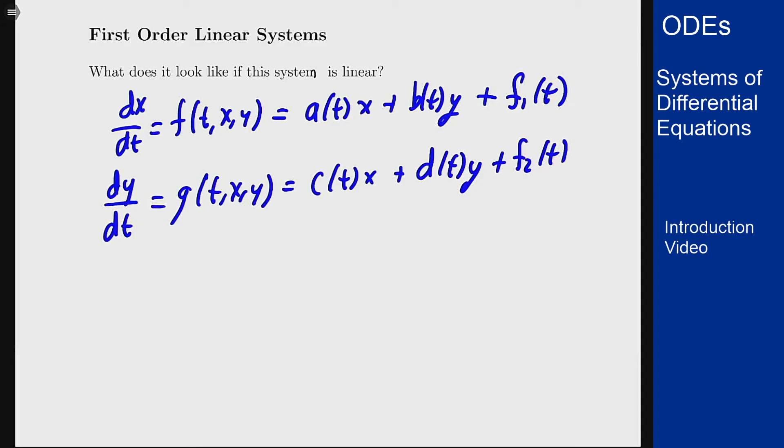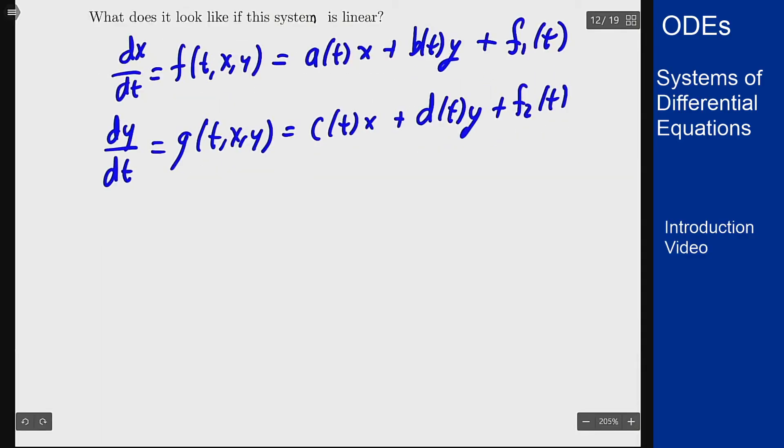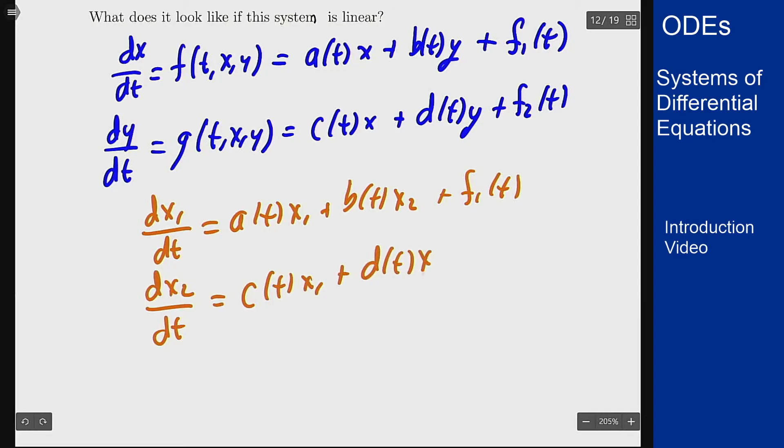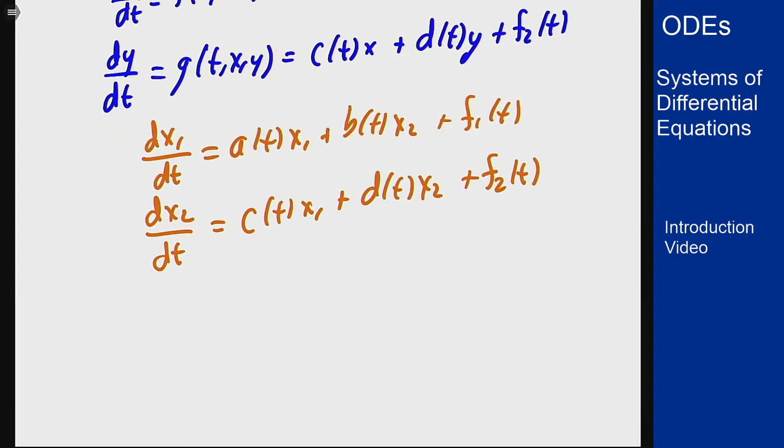What happens if I put this in vector form? In vector form I'm going to replace x by x1 and y by x2. So I'll have something like dx1 dt equals a of t times x1 plus b of t times x2 plus f1 of t, and dx2 dt is c of t x1 plus d of t x2 plus f2 of t, and I can rewrite this in a nicer way.